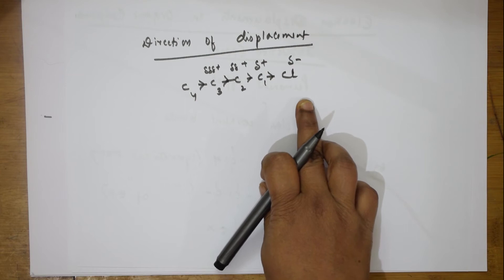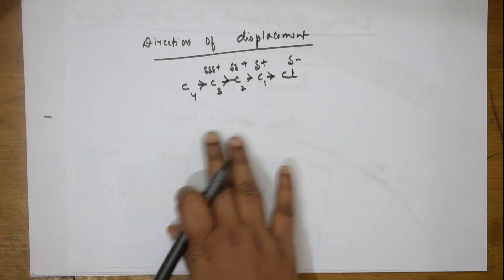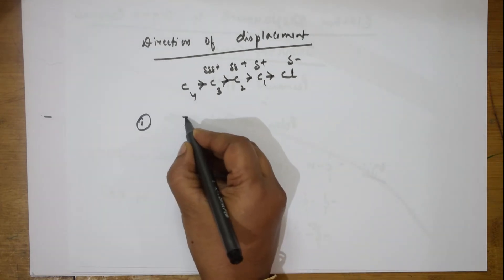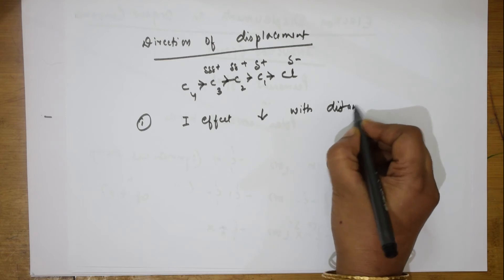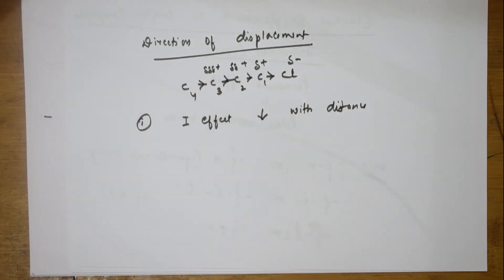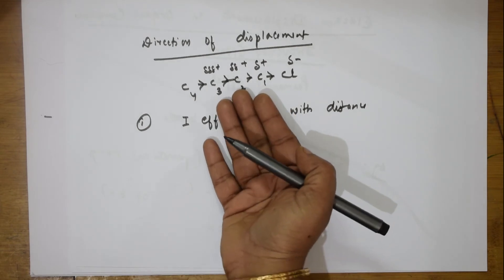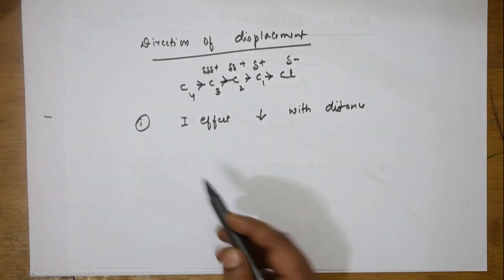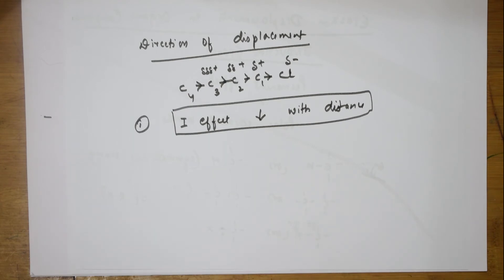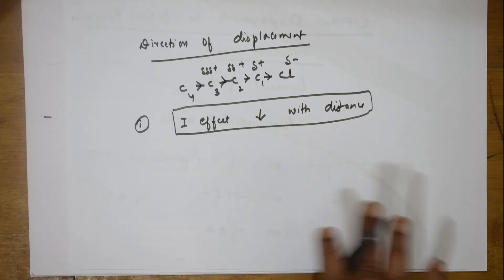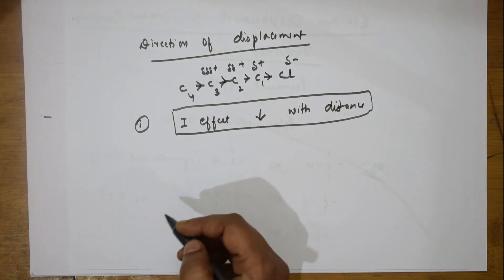An important point: the inductive effect decreases with distance. As you move farther from the electronegative atom, the inductive effect becomes weaker — in fact, it is almost negligible beyond the second or third carbon. Also, the inductive effect does not involve actual transfer of electrons from one atom to another; it only displaces them permanently.